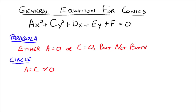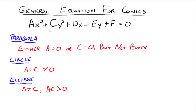For a circle, the coefficient for x squared and the coefficient for y squared have to be the same number, but they both cannot be zero. For an ellipse, the coefficient for x squared and the coefficient for y squared — a and c — cannot be the same number, and their product has to be greater than zero. That means a and c are not the same number and their product has to be positive.